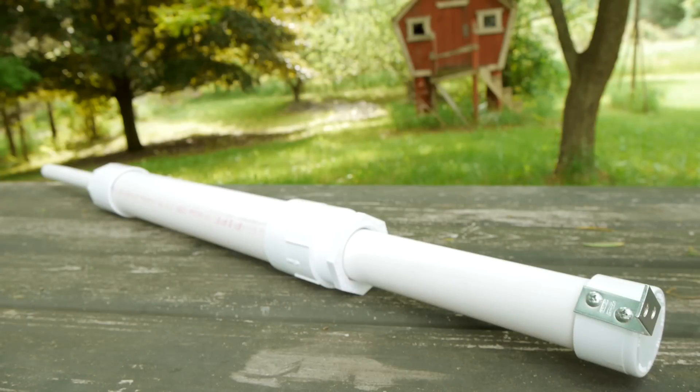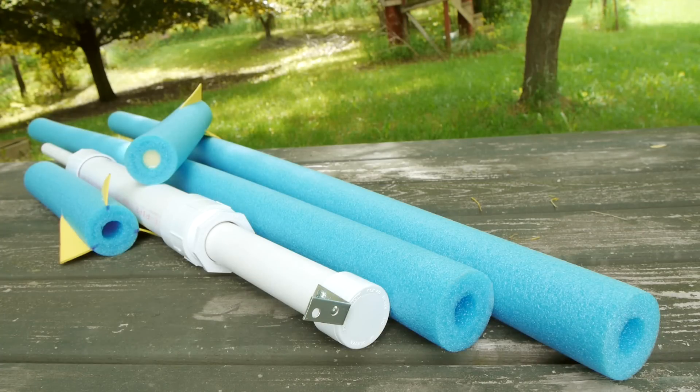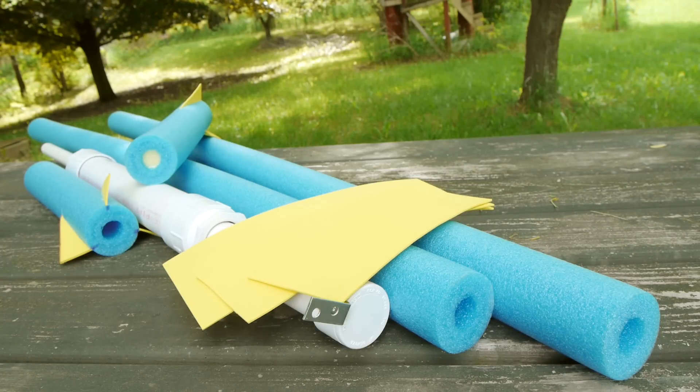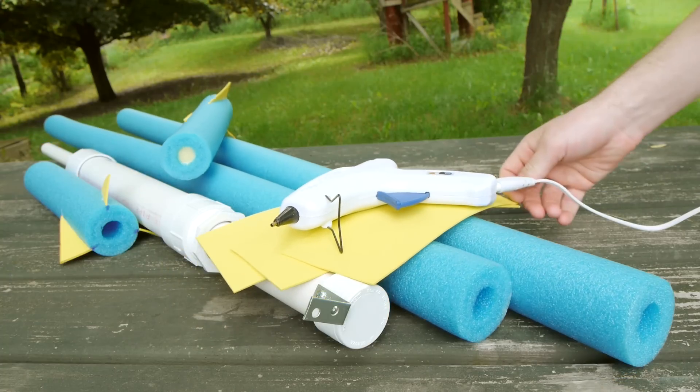With the launcher now completed, let's make some rockets. I'll be making these rockets out of foam pool noodles like I mentioned before, and some sheets of craft foam and a hot glue gun to make quick work of holding everything together.